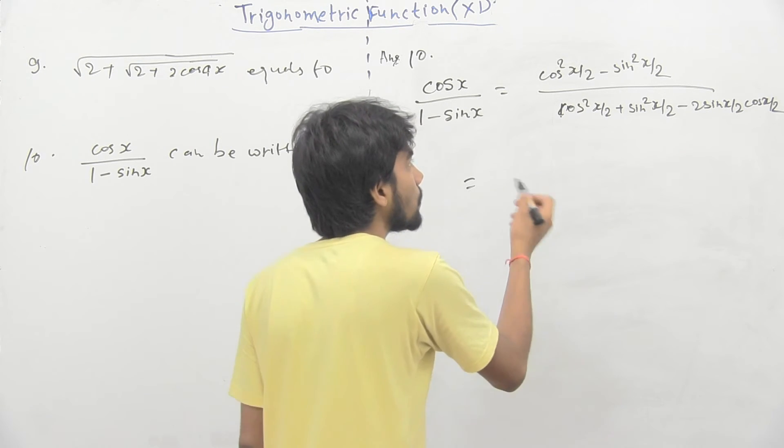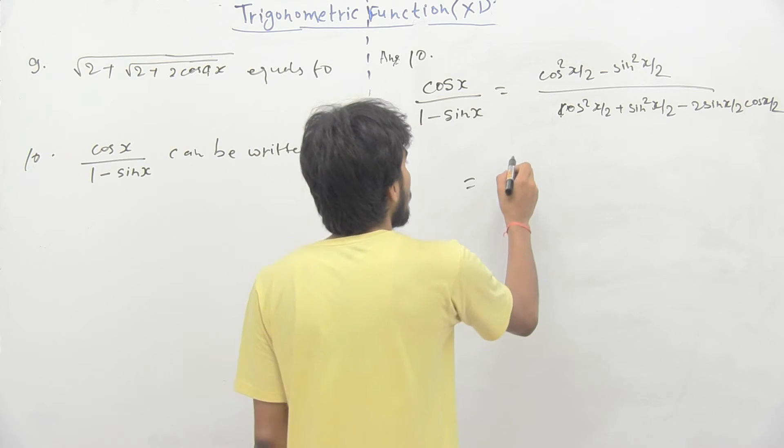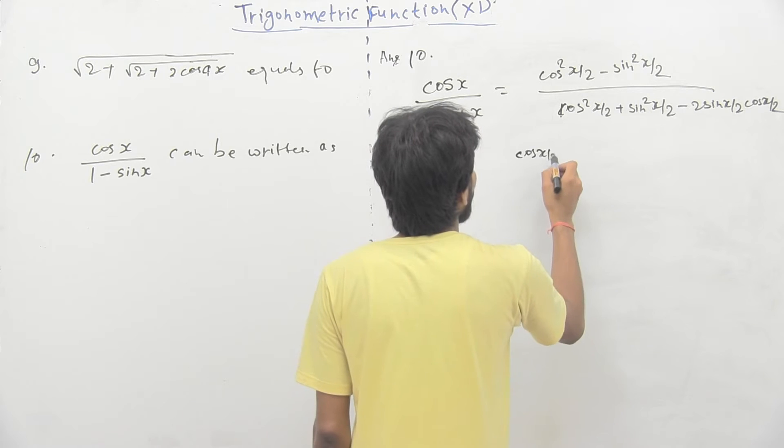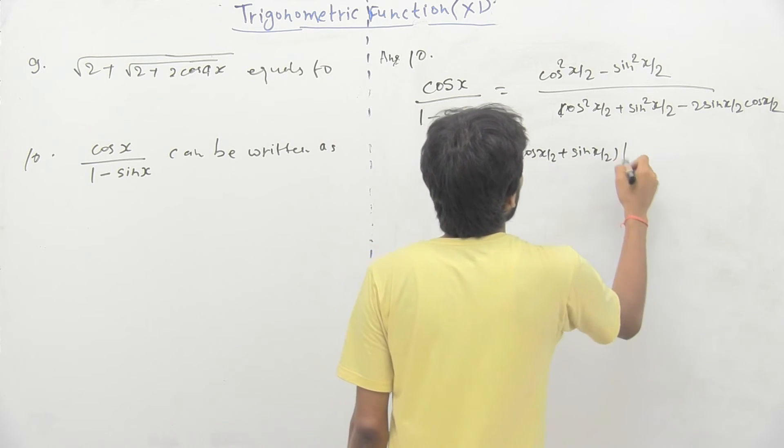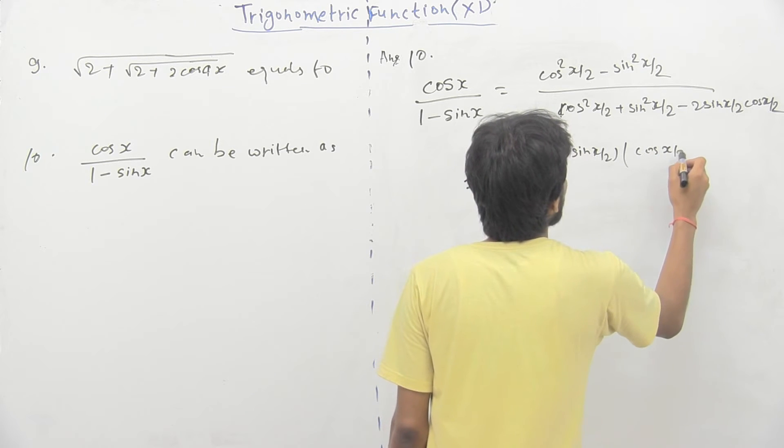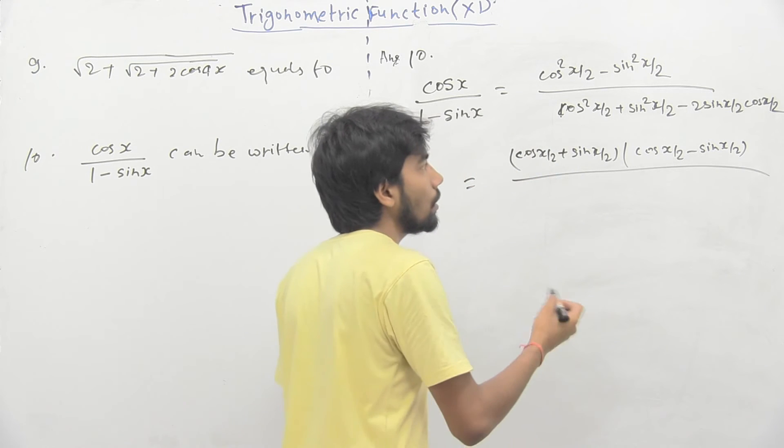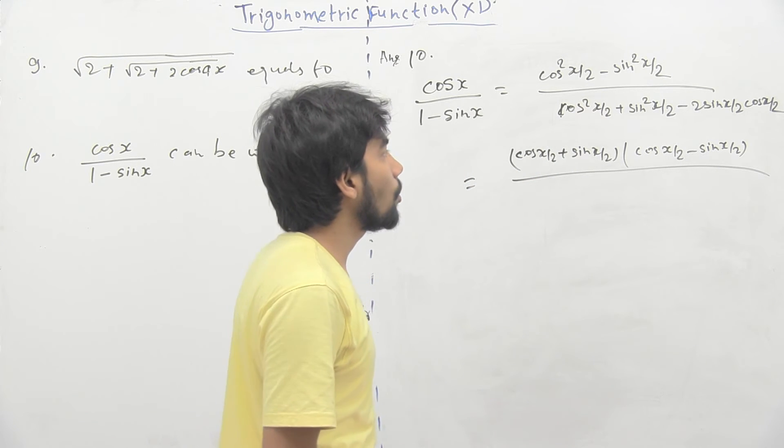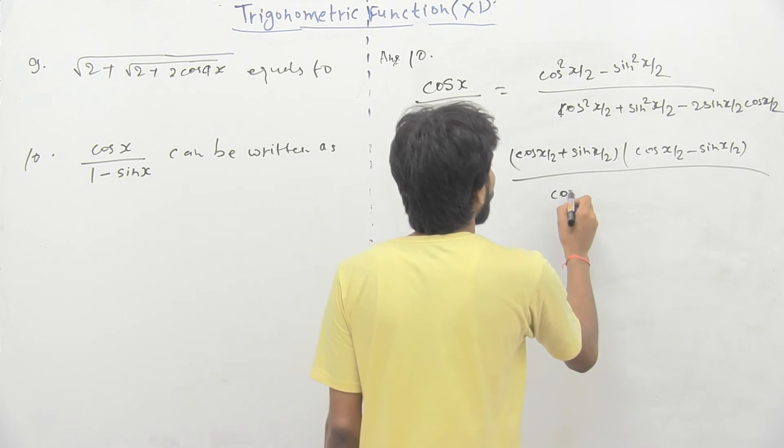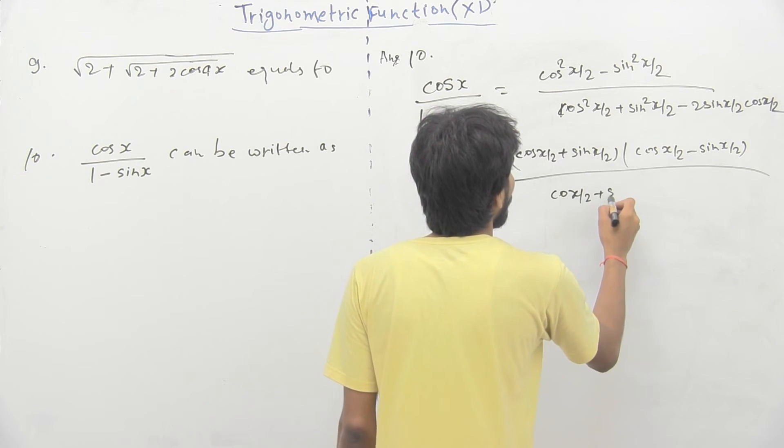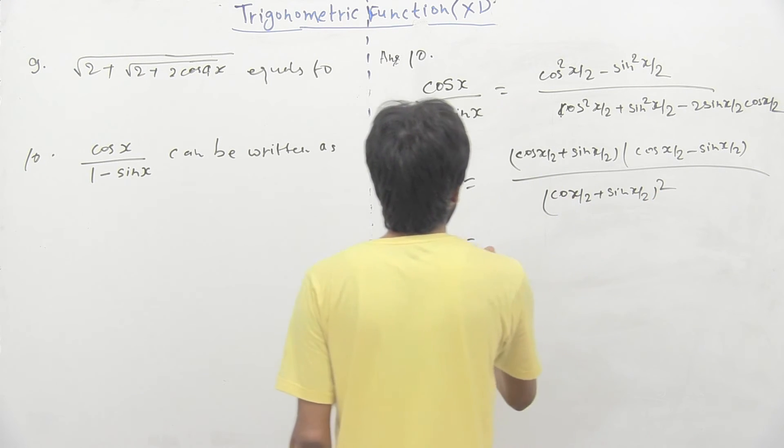Further, this numerator is in the form of a square minus b square. So, write it, cos x by 2 plus sin x by 2 into cos x by 2 minus sin x by 2. And the denominator is in the form of a square plus b square minus 2ab. So, it will become cos x by 2 plus sin x by 2 whole square.